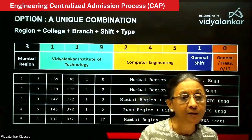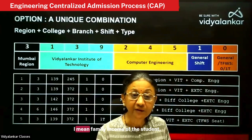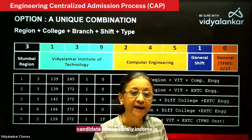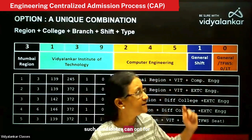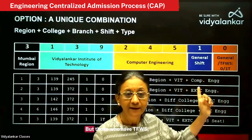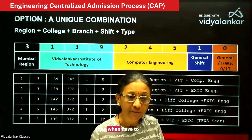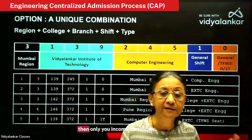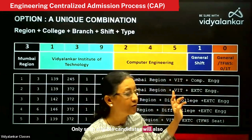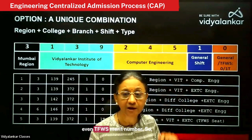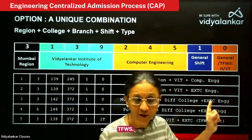So who is eligible for TFWS? It is on the basis of family income of the student. Candidates whose family income is less than 8 lakhs per annum can opt for TFWS. Those who want to opt for TFWS must upload their income certificate at the time of CAP registration. Only such eligible candidates will also get a TFWS merit number along with the state level merit number, and only these eligible candidates can opt for TFWS.